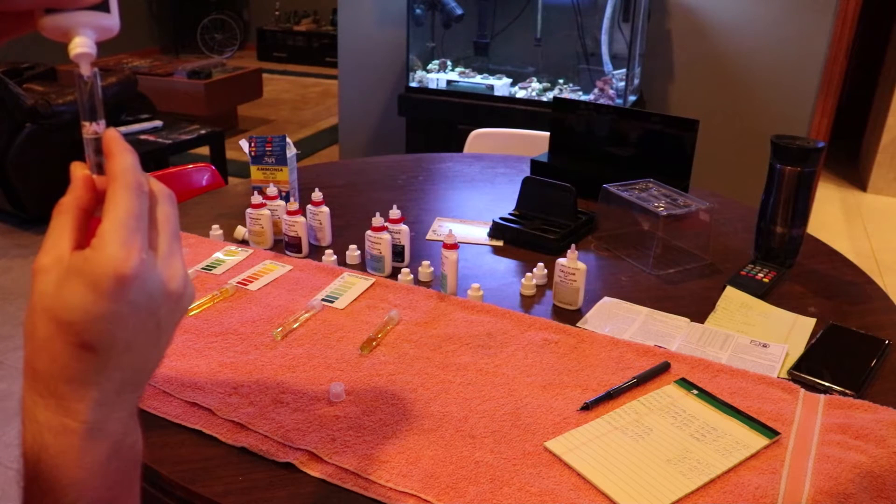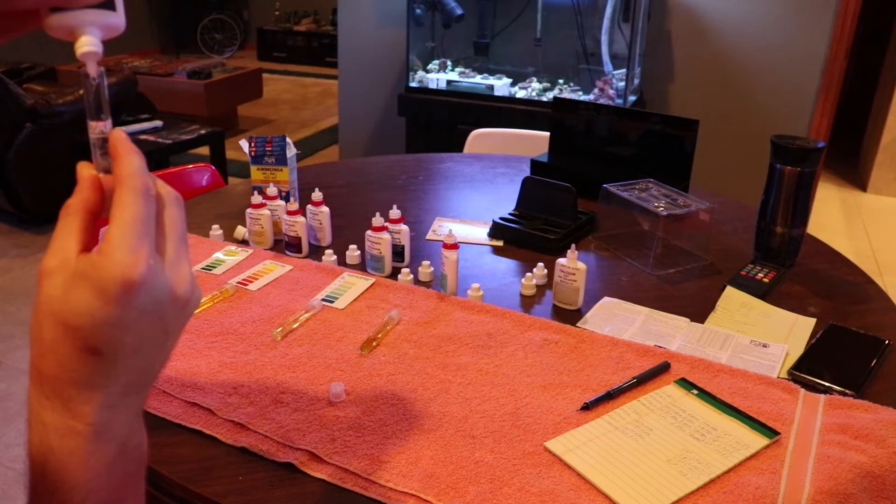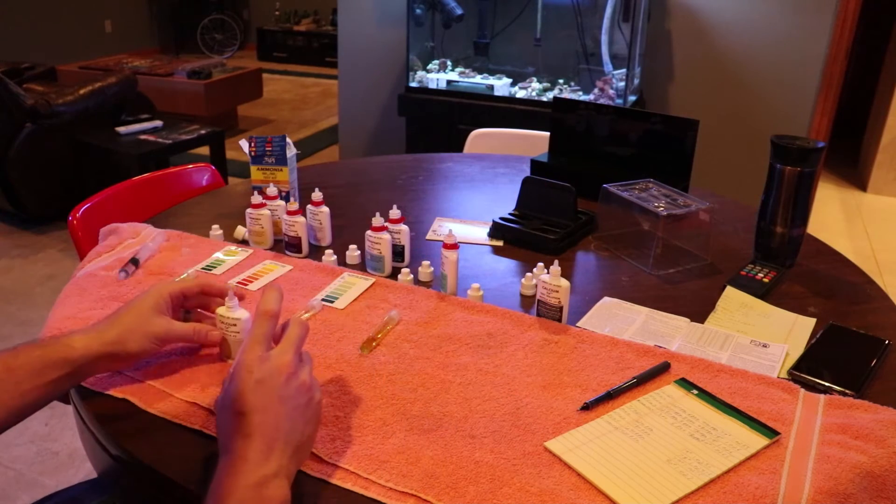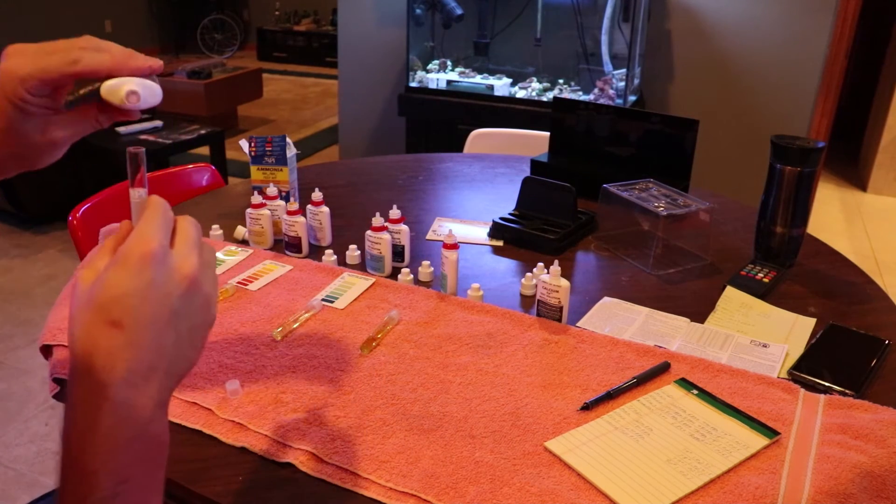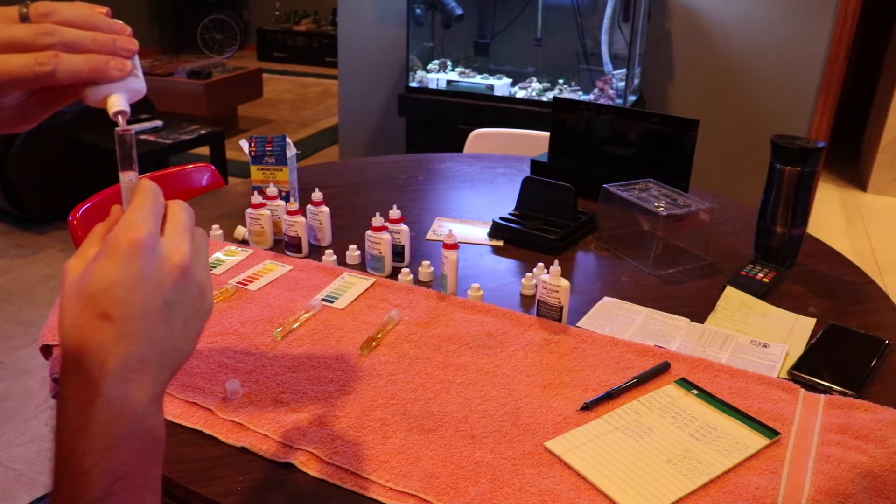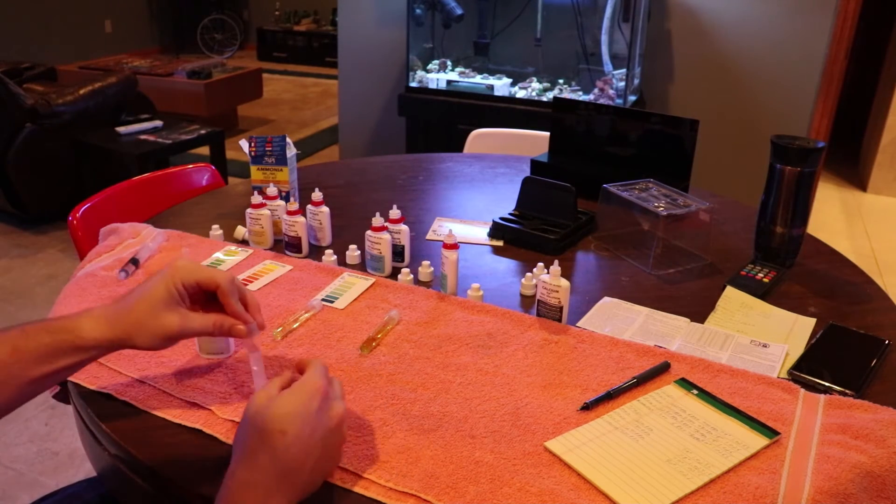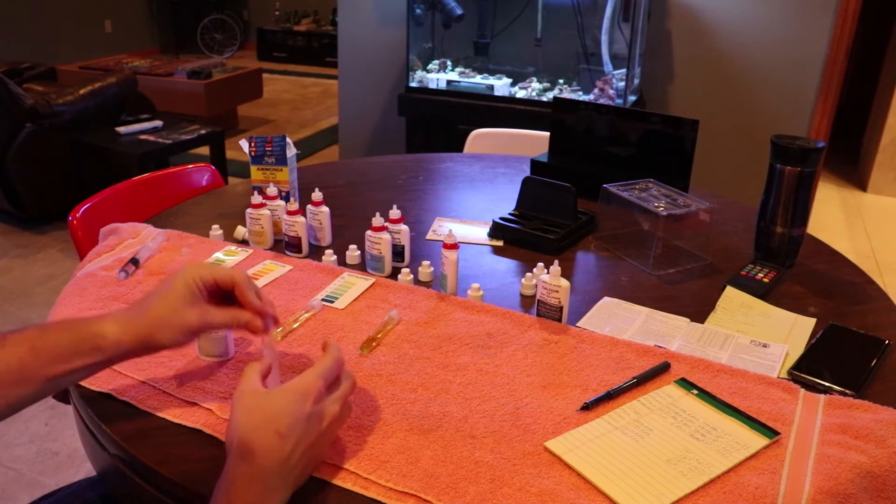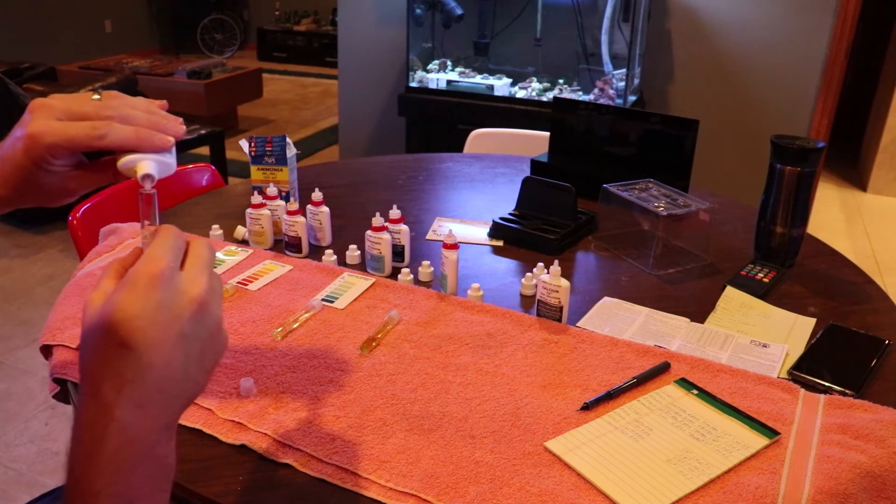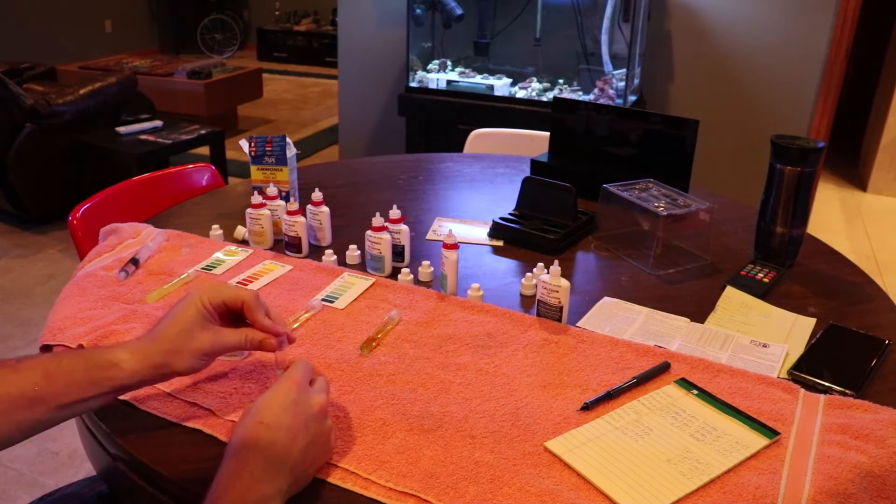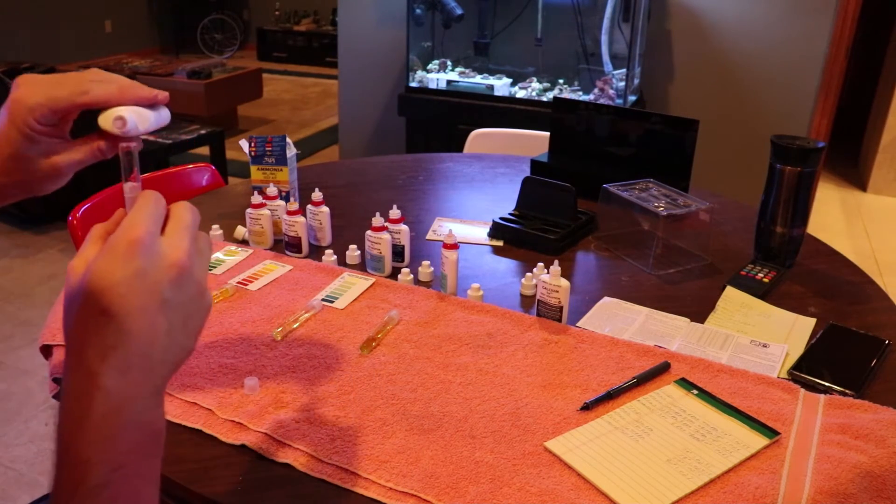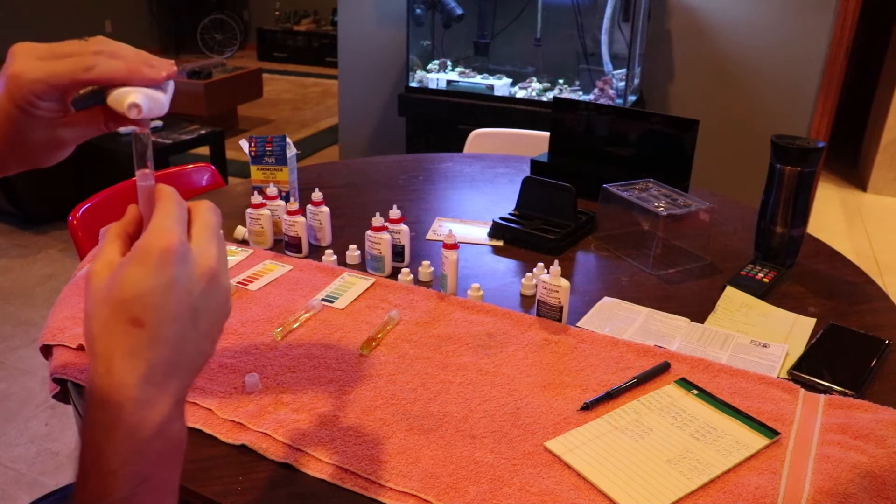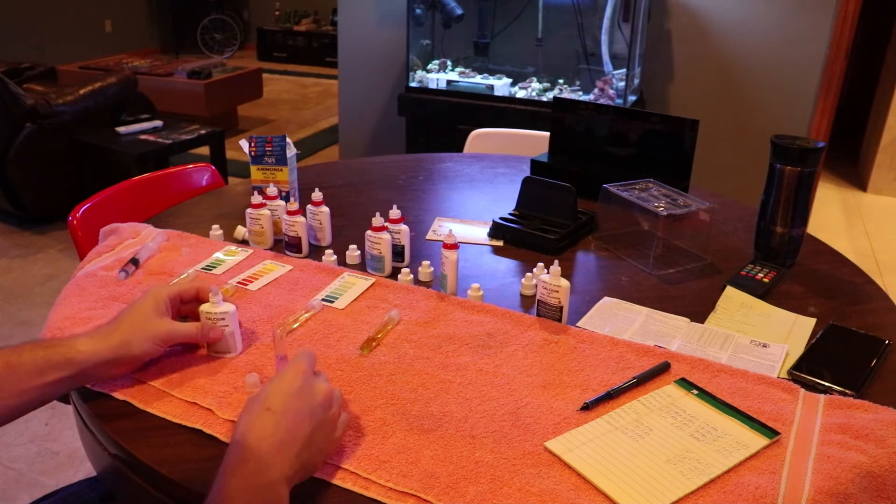Moving on to calcium. Calcium bottle number one, you're going to add 10 drops, put the cap back on, shake it. A lot of redundancy here with this testing. Then what you're going to do is add one drop at a time from bottle number two, put the cap back on, shake it. Do it again, another drop, cap back on, shake it. You're going to keep doing this until the liquid in the vial turns from a pink color to a dark purple.